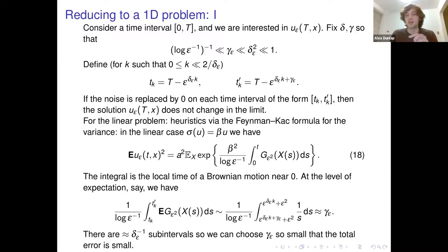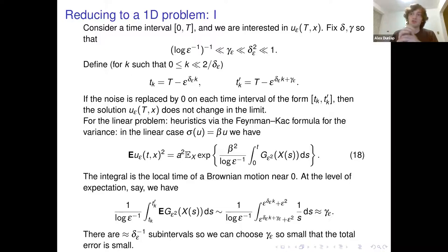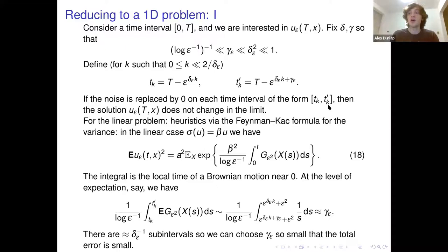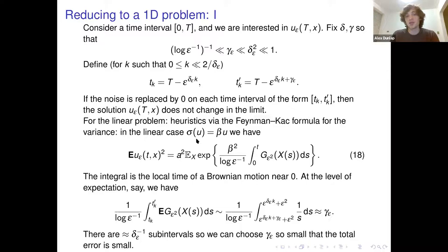Why is this reasonable? The contributions of the noise to the solution operate on an exponential scale — the noise on a time interval contributes according to the length of that interval in the exponent of epsilon. Because gamma is much smaller than delta, the times between t_k and t_k' are much smaller on an exponential scale than the times we're leaving in, so most of the noise is still contributing. In the linear case this follows from the Feynman-Kac formula for the variance.